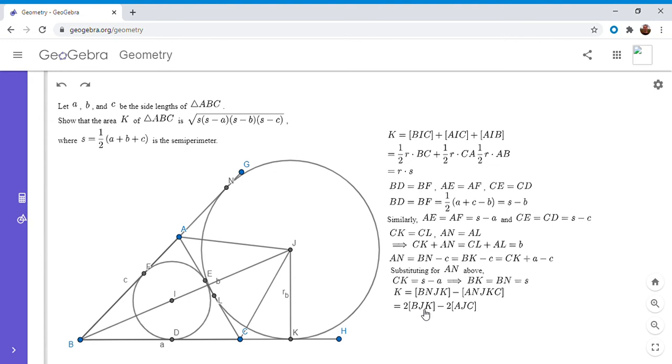So the area of BNJK, I'm letting r_B be the radius of the excircle, but it would be r_B times BK over 2. And we said BK was s. Okay, so the area of BNJK, twice the area of triangle BNJK, it's just r_B times s. And twice the area of triangle AJC, well, JL would be the radius r_B, and AC is just b. So twice the area would just be r_B times b. And then we can factor out the r_B. So that's just r_B times s minus b. All right, so we're starting to get somewhere because we have two different expressions for K.